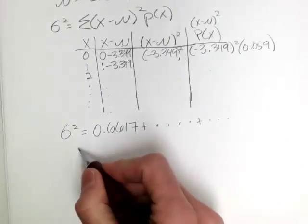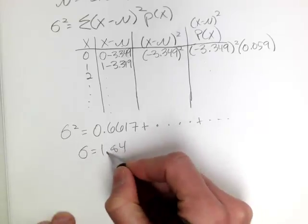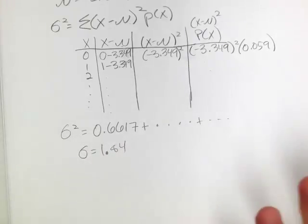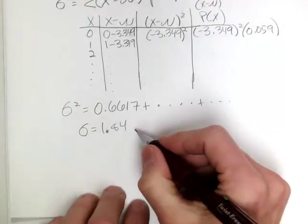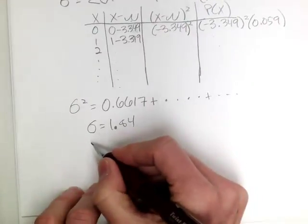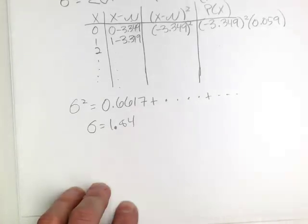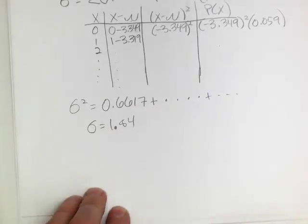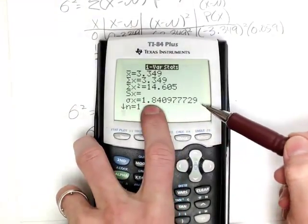So sigma is about 1.84 with rounding. So you can round as you're told to round in MyStatLab. But remember, this problem is asking for the variance also. So remember the relationship between the standard deviation and the variance. The variance is just the standard deviation squared.